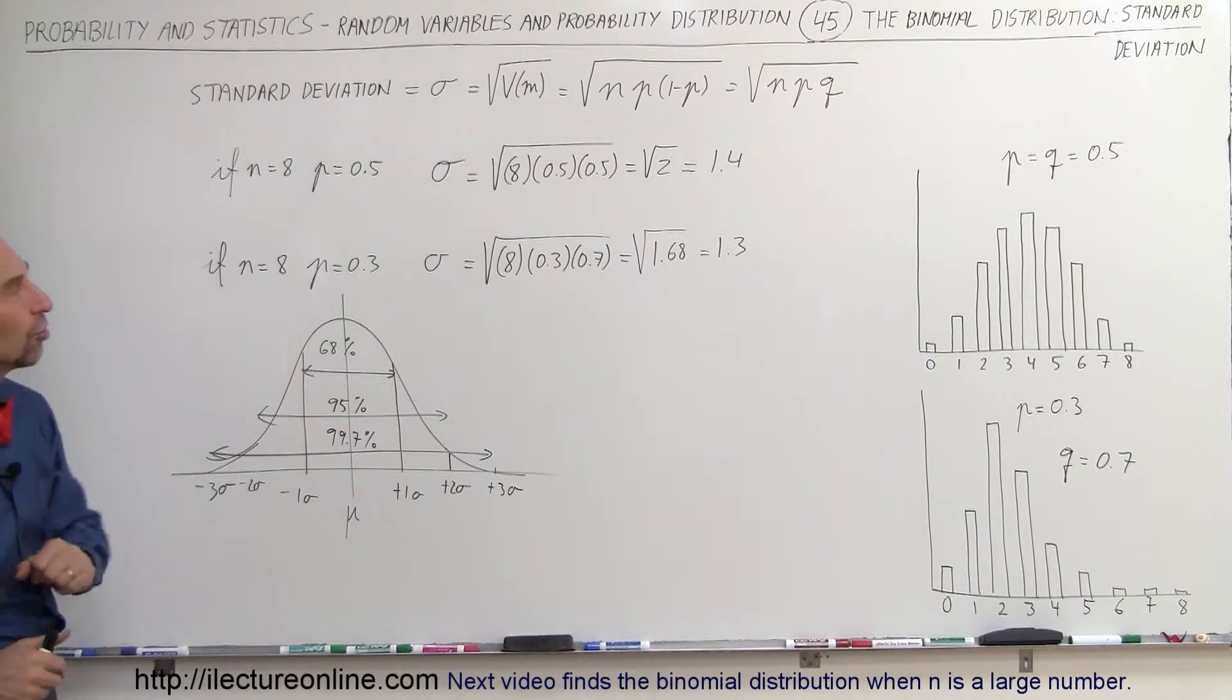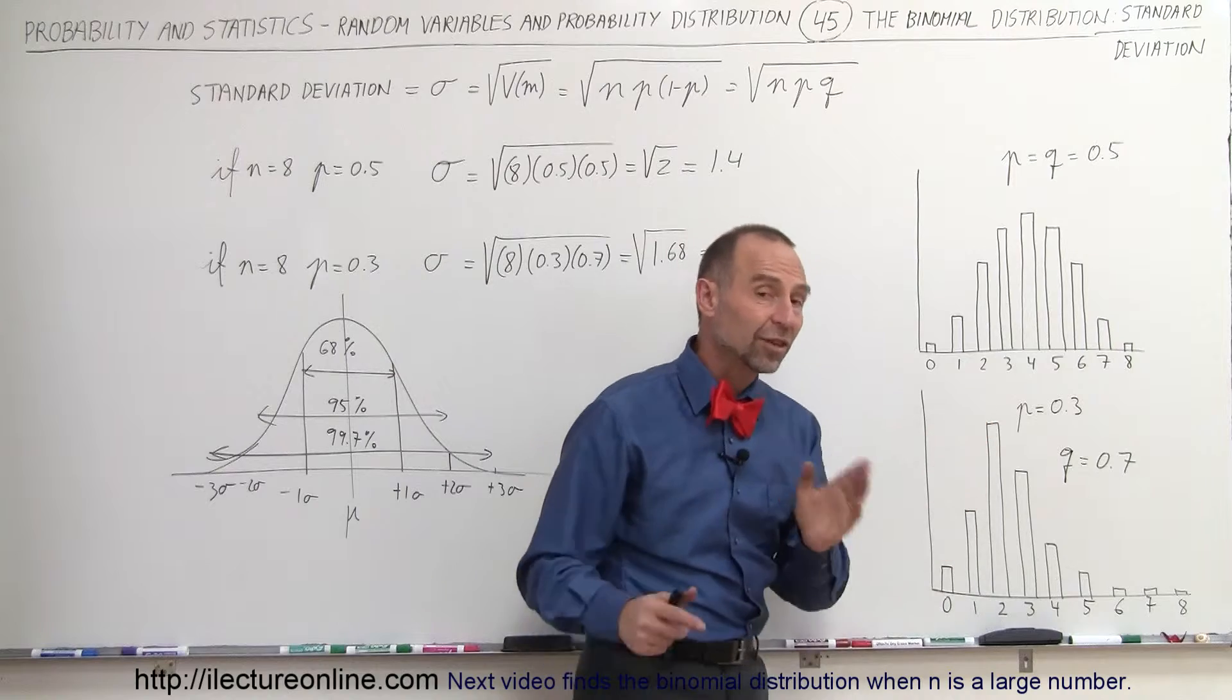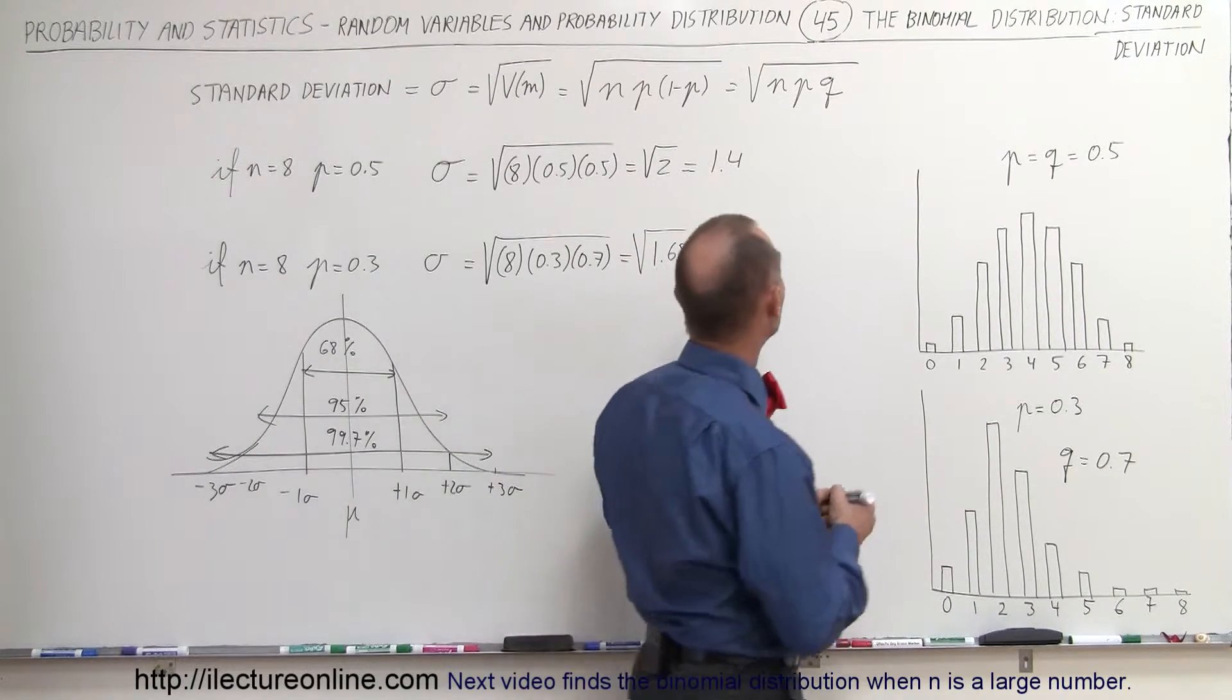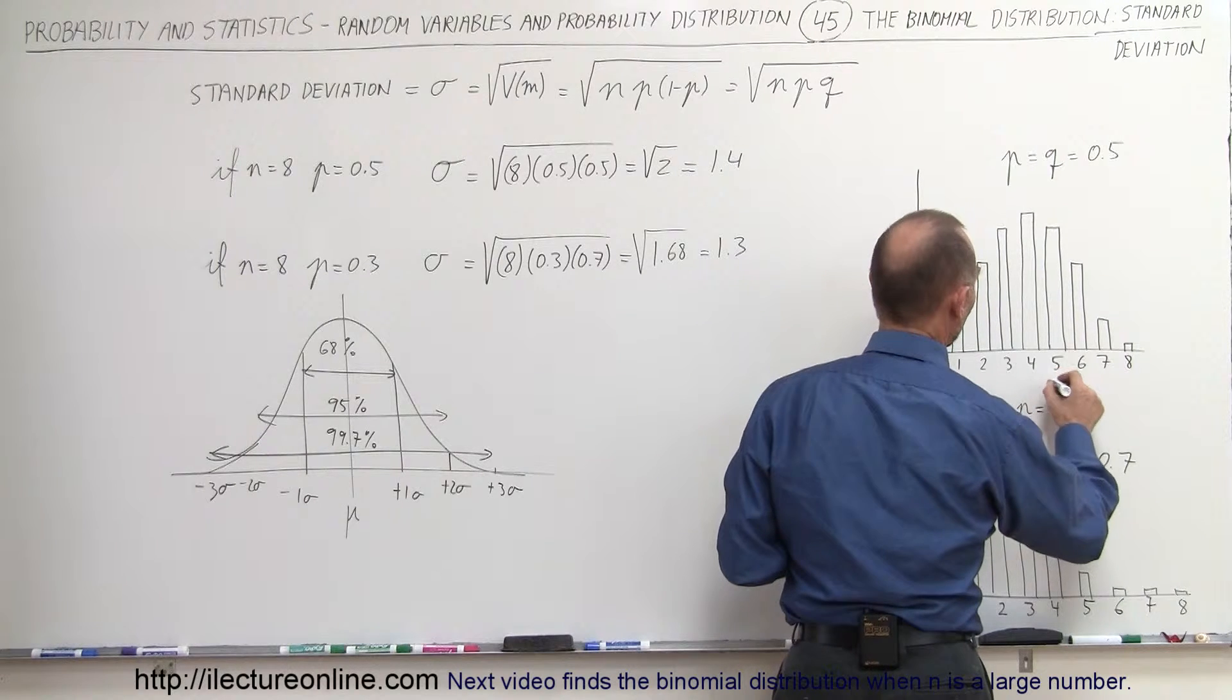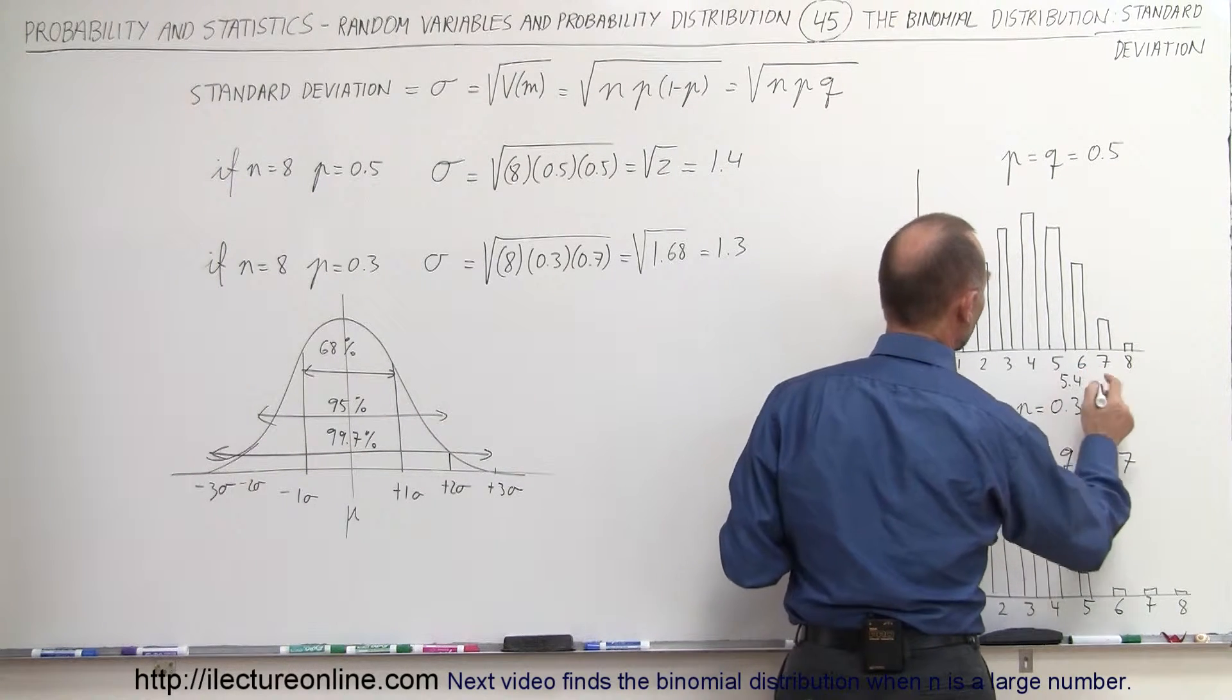So when we look at the distribution, knowing in this case that the expected value is equal to 4 and the standard deviation is 1.4, it would be 4 plus 1.4 would be 5.4 for a single sigma, that would be 6.8 for 2 sigma, and it would be 8.2 for 3 sigma.